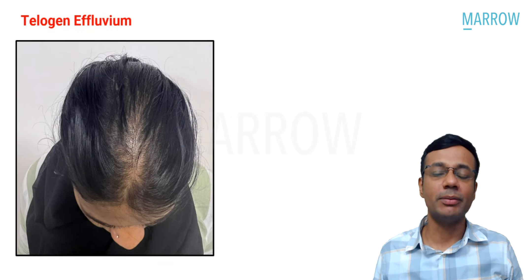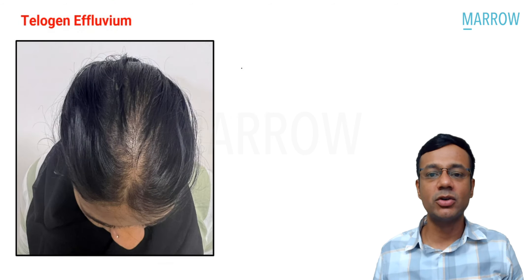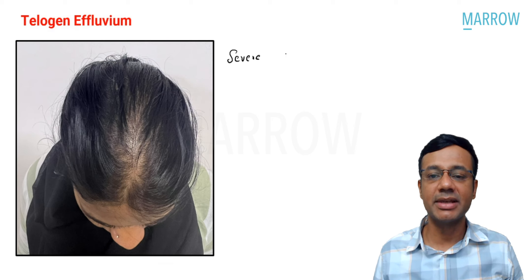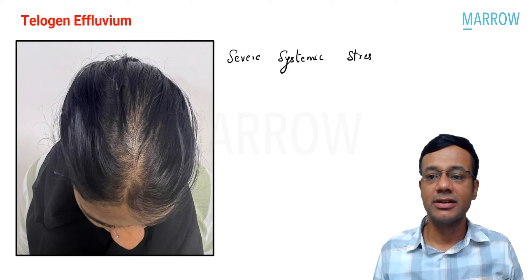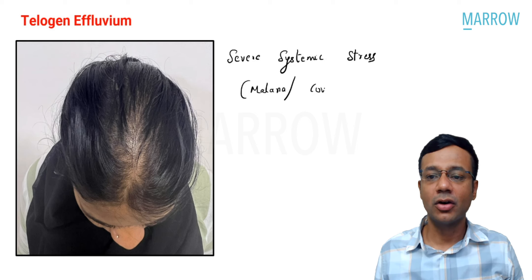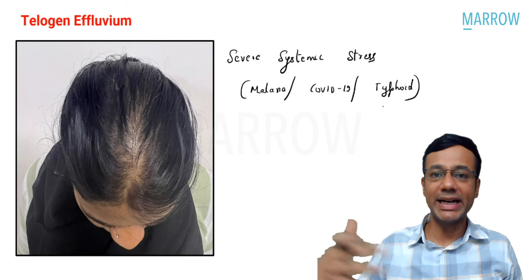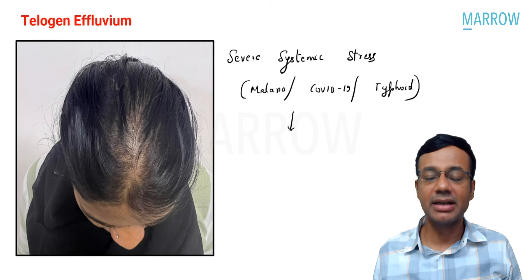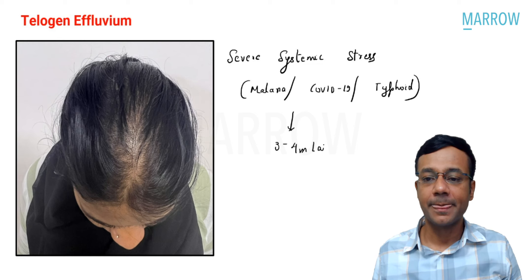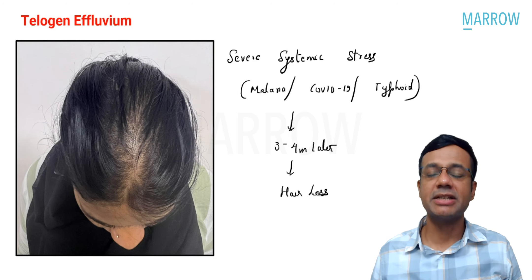Telogen effluvium is also a non-scarring alopecia. The concept is severe systemic stress — examples include malaria, COVID-19, or typhoid. Secondary to systemic stress, there is premature entry of hair into the telogen phase, which lasts three to four months. That is why three to four months later, the patient presents with hair loss.